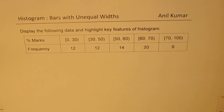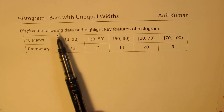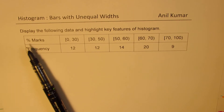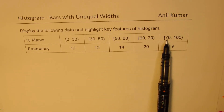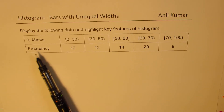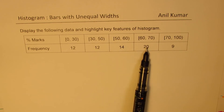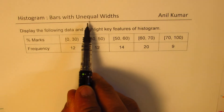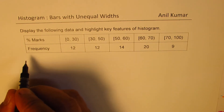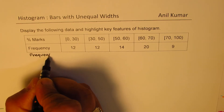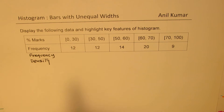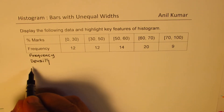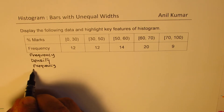Frequency density can be calculated by dividing the frequency by the interval — frequency density equals frequency divided by interval. So here we have 12 as the frequency and the interval is from 0 to 30, so we divide by 30. In the next case, 12 will be divided by 20 (the interval from 30 to 50). Then 14 will be divided by 10, 20 will be divided by 10, and 9 will be divided by 30.